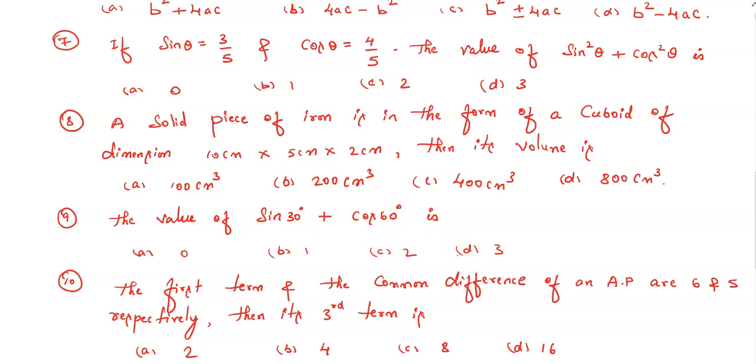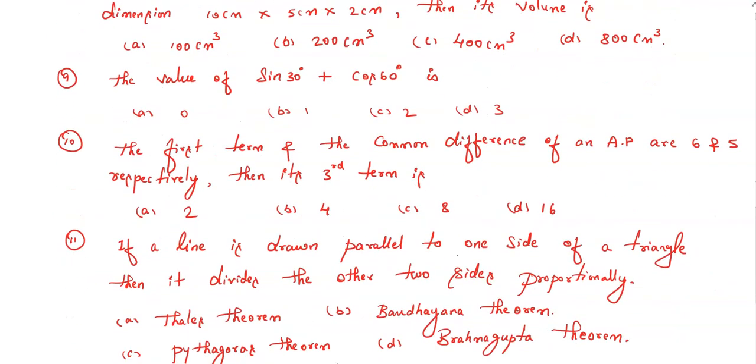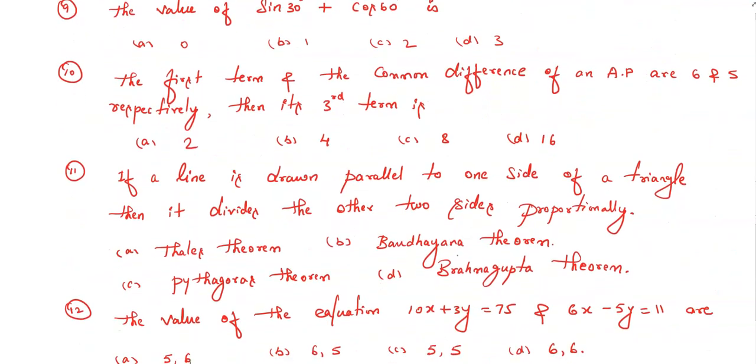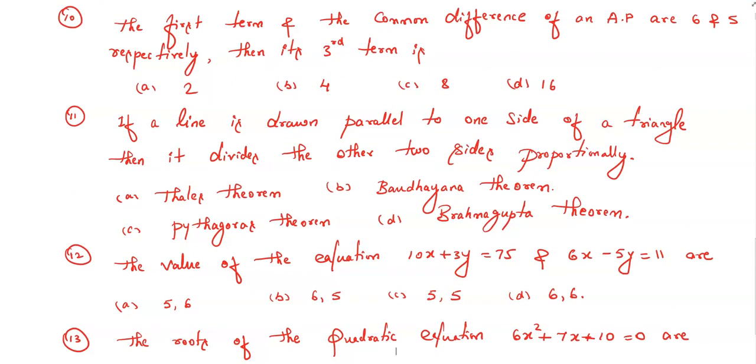Question number ten: the first term and the common difference of an AP are 6 and 5 respectively, then its third term is—among these four you need to select which is the correct one.